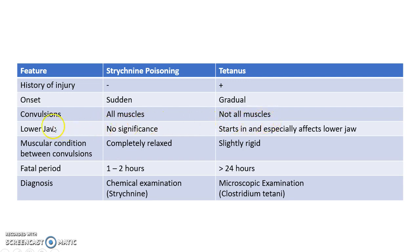Coming to the significance of the lower jaw, in Strychnine poisoning there is no special significance of the lower jaw, whereas in case of tetanus the convulsions start in the lower jaw and especially affect it — that's why tetanus is also called lockjaw.